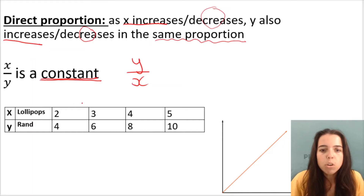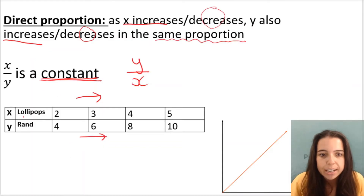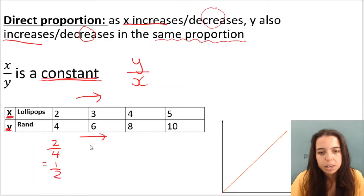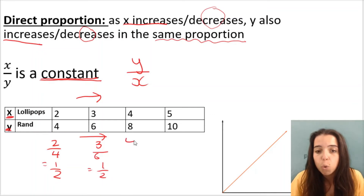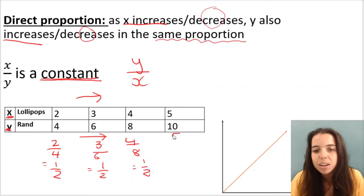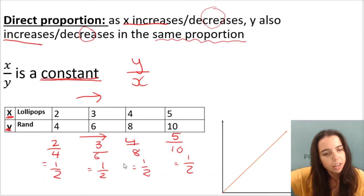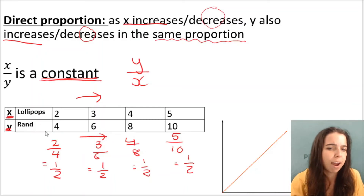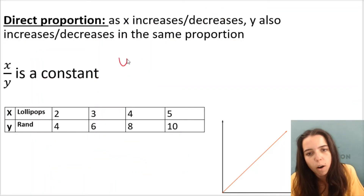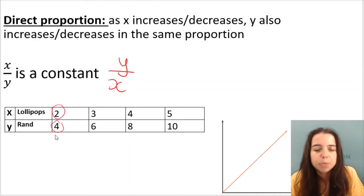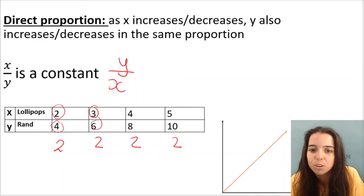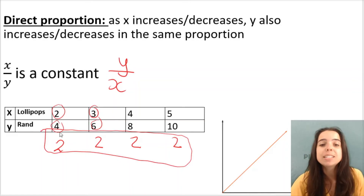Let's look at my lollipop example. The more lollipops I sell, as lollipops increases, the amount of rand that I make increases. In each case, x divided by y should be a constant. So in the first case: 2 divided by 4 gives me a half; 3 divided by 6 gives me a half; 4 divided by 8 gives me a half; 5 divided by 10 gives me a half. So in each case, the one variable divided by the other gives me a constant. If I flip it and do rand divided by lollipops — y divided by x — 4 divided by 2 is 2, 6 divided by 3 is 2, 8 divided by 4 is 2, and 10 divided by 5 is 2. So the one variable divided by the other is always a constant.